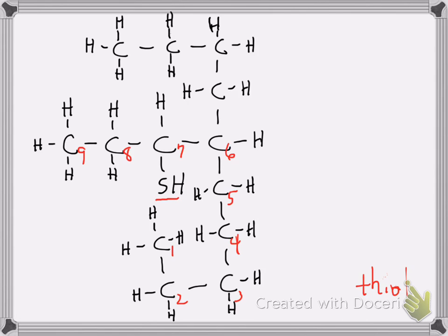We also want the thiol to have the lowest number possible. It must be numbered in a way that gives the sulfhydryl group, the SH, the lowest number possible. I could attempt to number it the other way, and I'm doing that in green. If I have my numbering right, and I think I do, you can see that by the red numbering, the sulfhydryl group would be on carbon 7. By the green numbering, it'd be on carbon 3. Therefore, the green numbering is the numbering I'm going to go with.